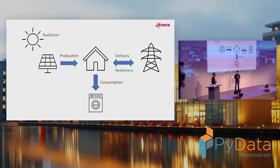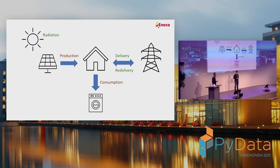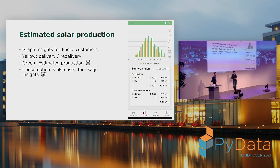In the night, you don't have solar production. You get delivery from the grid, and that goes to consumption. Consumption can come either from production or from the grid. Your production can go either back into the grid, or directly be consumed inside the house. Radiation, delivery, and re-delivery are things you can measure — delivery and re-delivery is what goes in and out of your house from the smart meter. But as a consumer, you may be more interested in what is my production and what is my consumption. That's the use case we're going to talk about today.